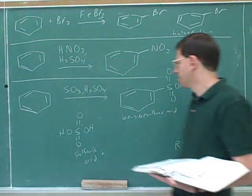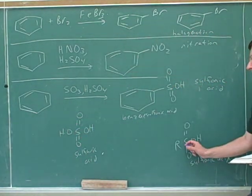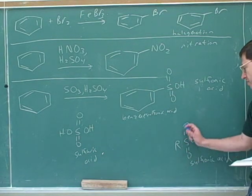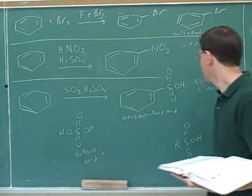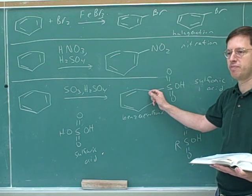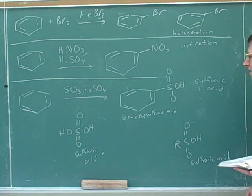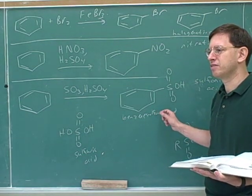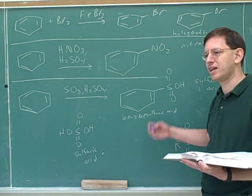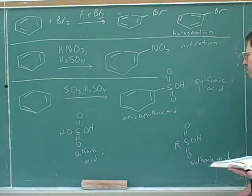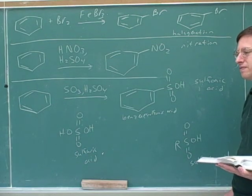Sulfuric acid is when the sulfur is attached to four oxygens. Sulfonic acid is when the sulfur is attached to three oxygens and a carbon chain. So this is not benzene sulfuric acid, it's benzene sulfonic acid. We already learned about sulfonates — sulfonates were good leaving groups from last term: toluene sulfonates, mesylate, tosylate. Those were related to sulfonic acids. So these are not sulfonates, this is the sulfonic acid, but it's related to the sulfonates.